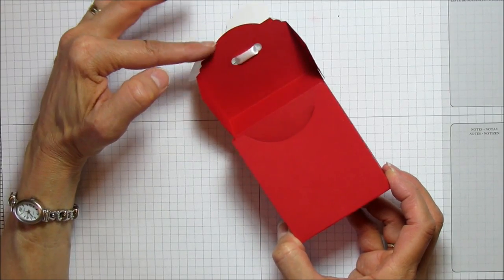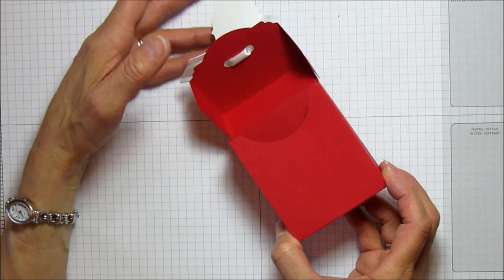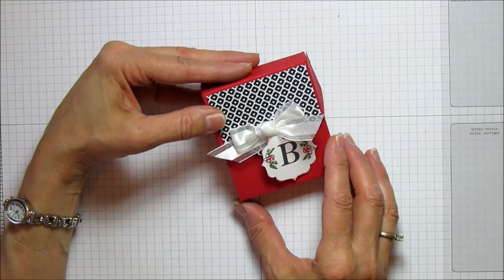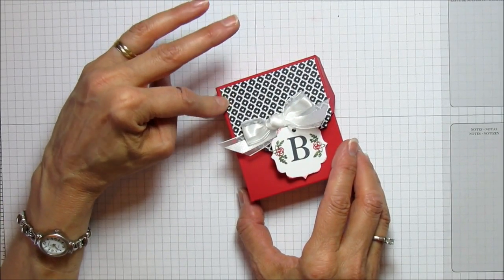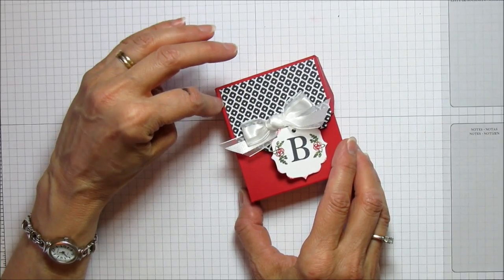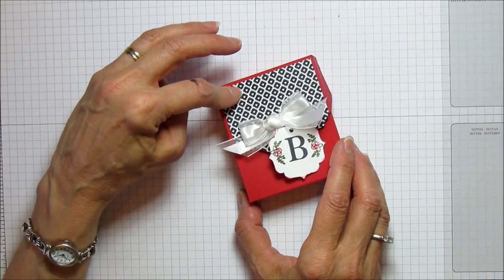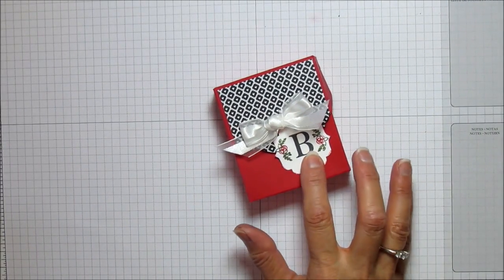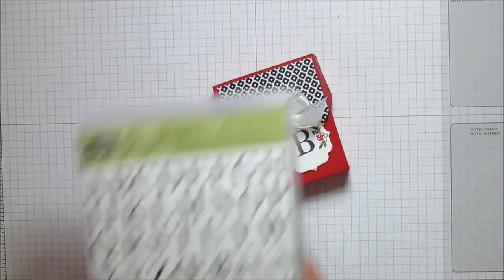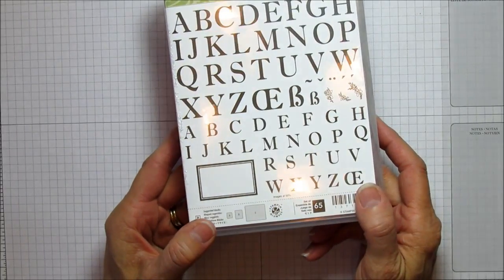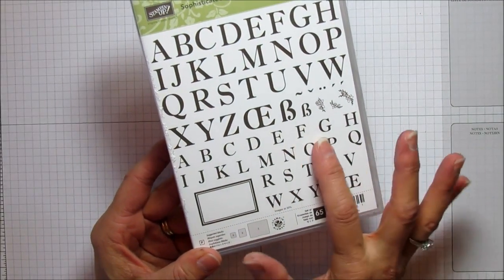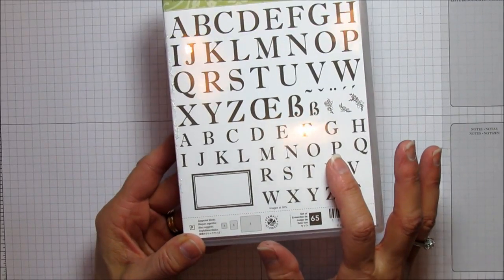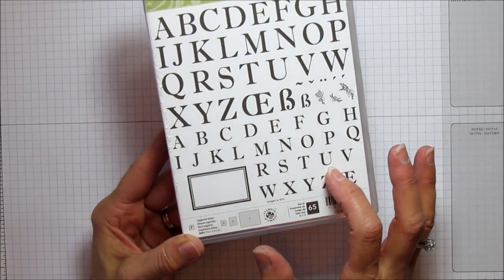I used our deco labels framelits for this to get a little fancier edge. This is real red with our Stacked with Love designer series paper, which is in our occasions catalog. You can still order that till June 2nd and I'm using our Sophisticated Serifs stamp set.